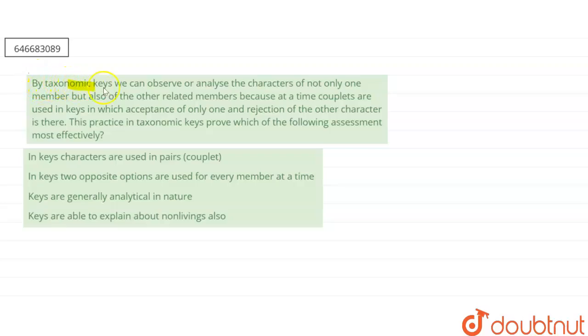Our question says that by taxonomic keys we can observe or analyze the characters of not only one member but also of the other related members, because at a time couplets are used in keys which acceptance of only one and rejection of other characters there.